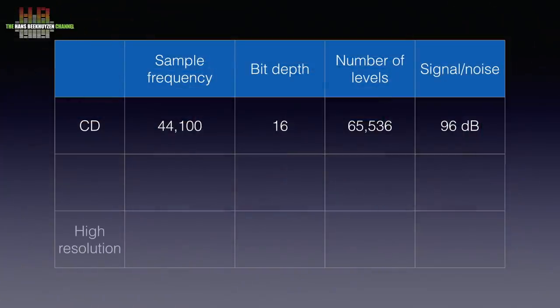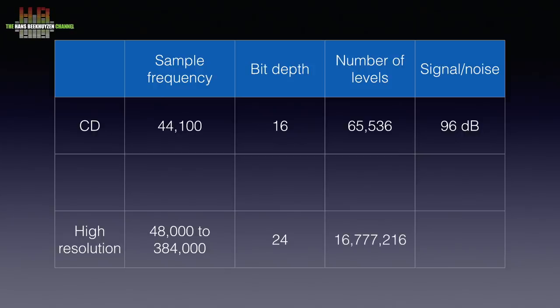The format is called 44.1 kHz, 16-bit. High-resolution recordings can be sampled at up to 384 kHz and 24-bit depth. 24-bit offers 16,777,216 discrete levels, in theory offering 144 dB signal to noise.